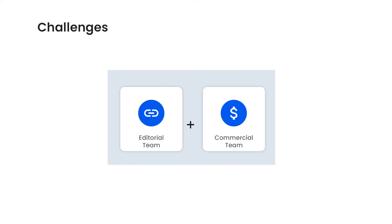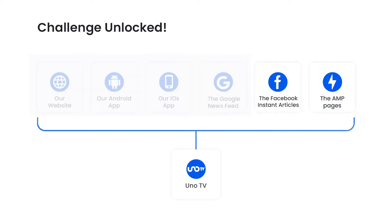We managed to find a solution for all of our challenges. The editorial team needed support for all kinds of embeds. The commercial team needed responsive ad units, header bidding, native ads, and in-stream ads. This solution reduced our workload, and now we're only supporting AMP as our main distribution platform and Instant Articles.